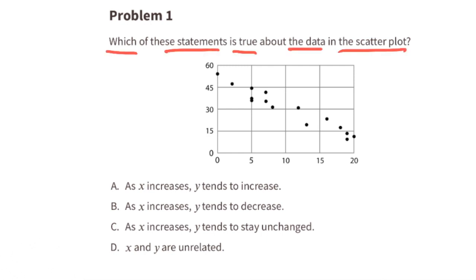Problem number one. Which of these statements is true about the data in the scatter plot? Option A: as x increases, y tends to increase. As the value for x increases, we can see that the value for y decreases. If we plot the points and show the line of the graph, we can see that the slope goes down, showing that as x increases, y tends to decrease. So this one wouldn't be true.